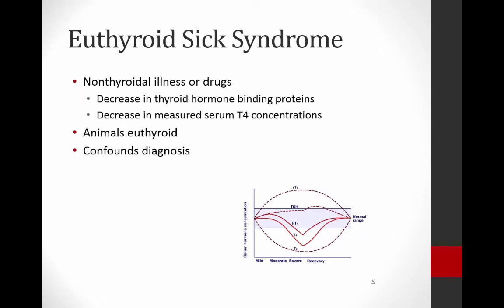The other thing I wanted to talk about — mainly because it can be confusing when we're trying to diagnose thyroid disease — is the syndrome of euthyroid sick syndrome. This is a term that was created to describe a disease in human medicine. It is a situation in which some sort of non-thyroidal illness or a drug itself may interfere with the amount of T4 that you're measuring in the serum. The main mechanism is that it probably decreases thyroid hormone binding proteins, which are the proteins that carry the free hormone around to the cells. There's a huge reserve of thyroid hormone in the body — a lot of these thyroid hormone binding proteins sit in the bloodstream with thyroid hormone bound to them.